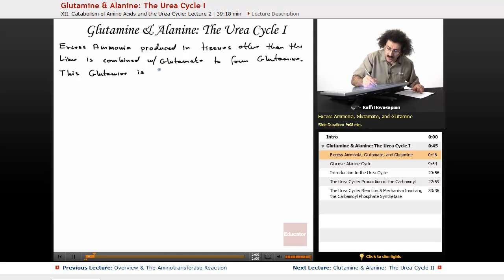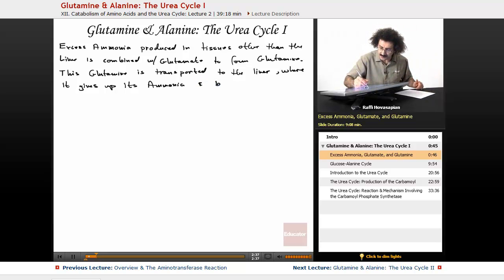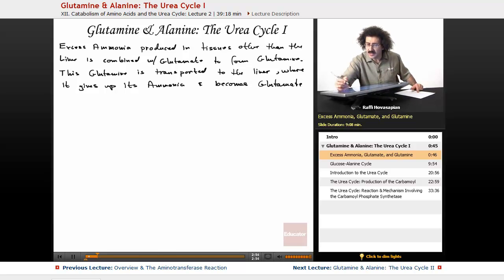So this glutamine is transported to the liver where it gives up its ammonia and becomes glutamate again. This glutamate is the central molecule for this whole amino acid metabolism. Okay, so let's go ahead and do this here.